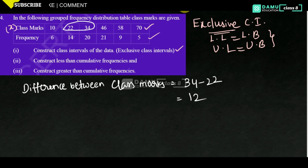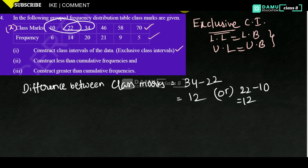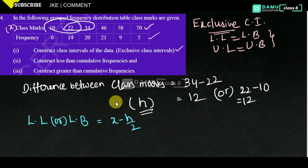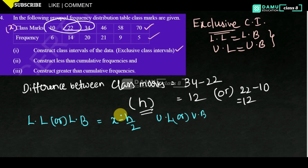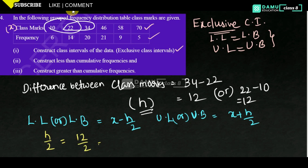Or you can take 22 minus 10, which also gives 12. This difference between class marks will be denoted with h. So here, lower boundary or lower limit will be x minus h/2, where x is the class mark for each one. Then upper limit or upper boundary will be equal to x plus h/2. So h by 2 will be 12 by 2, that will be 6.